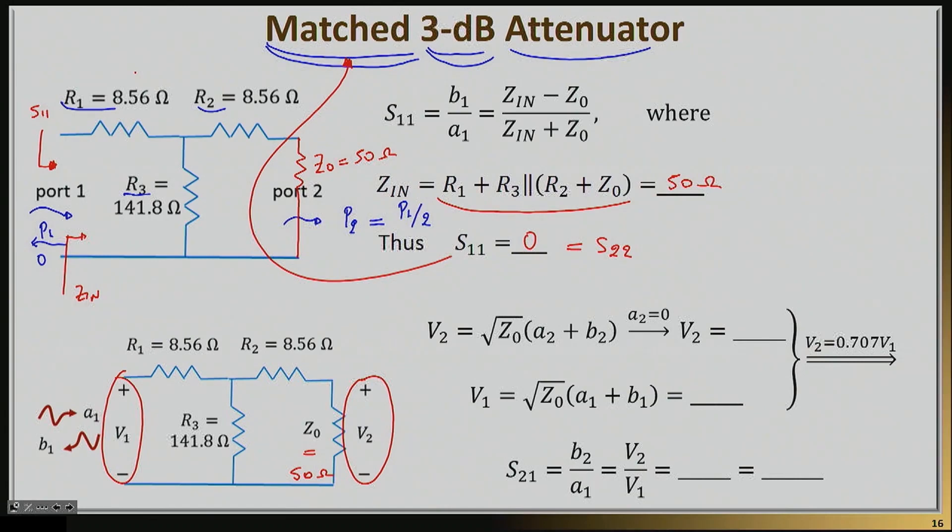V2 is going to equal Z0 times A2 plus B2. A2 is equal to 0 because of the termination, that means V2 is going to equal square root of Z0, 50 ohms in this case, times B2. Similarly, V1 is going to equal Z0 times A1 plus B1, and I have calculated the S11 from above, so that means this would equal Z0 times (1 plus S11) times A1. That is exactly what I had done for the electrically small T-junction, the electrically small three-way splitter. Nothing has changed so far.